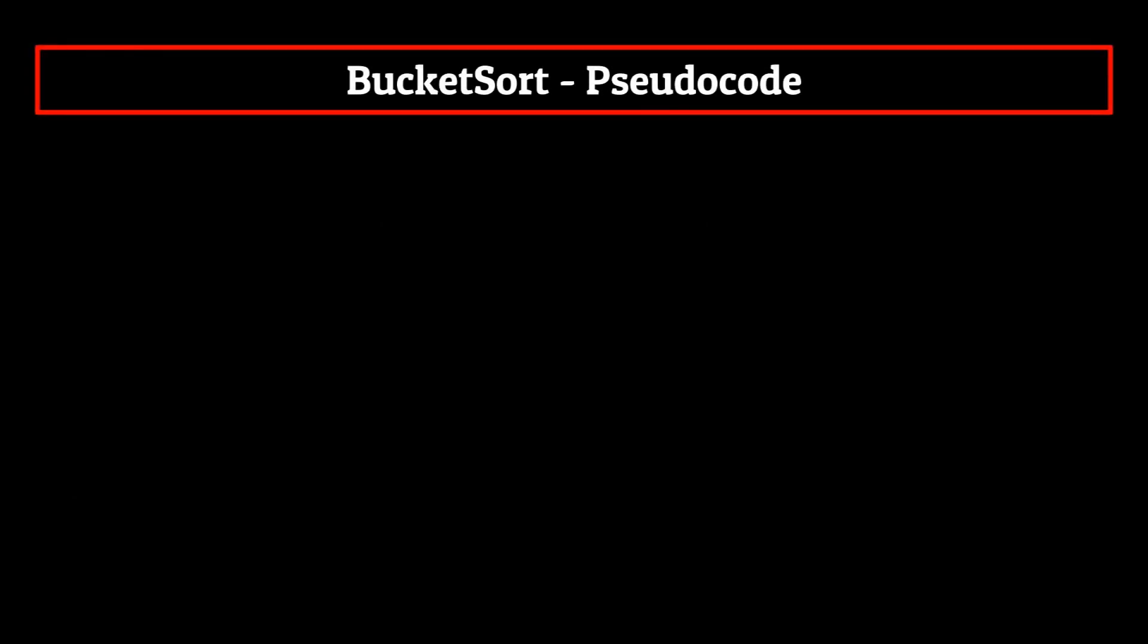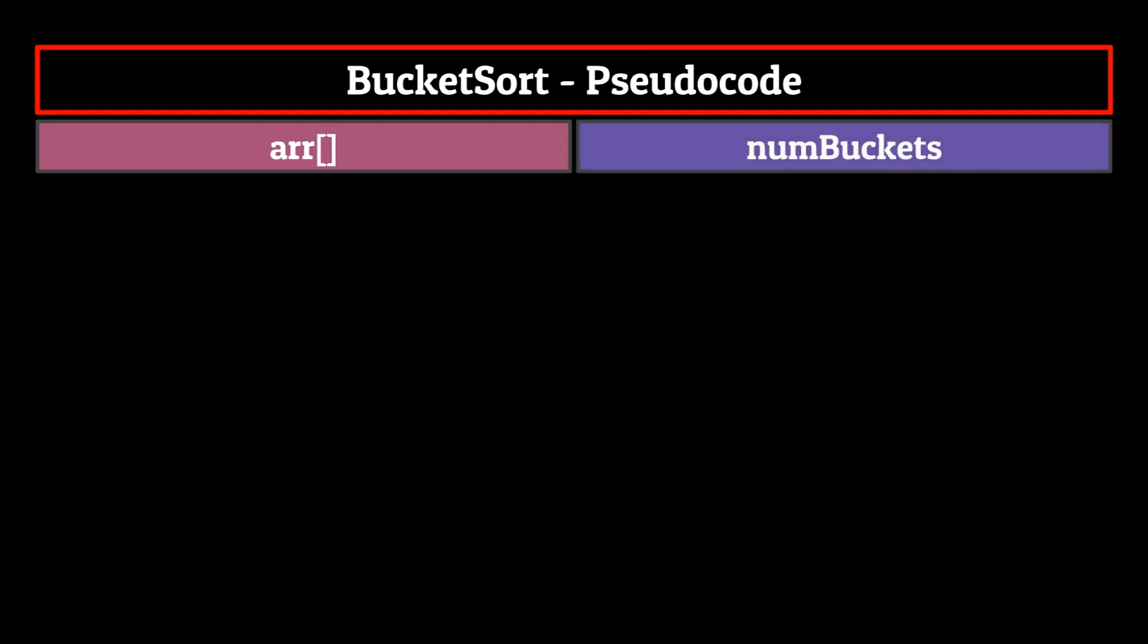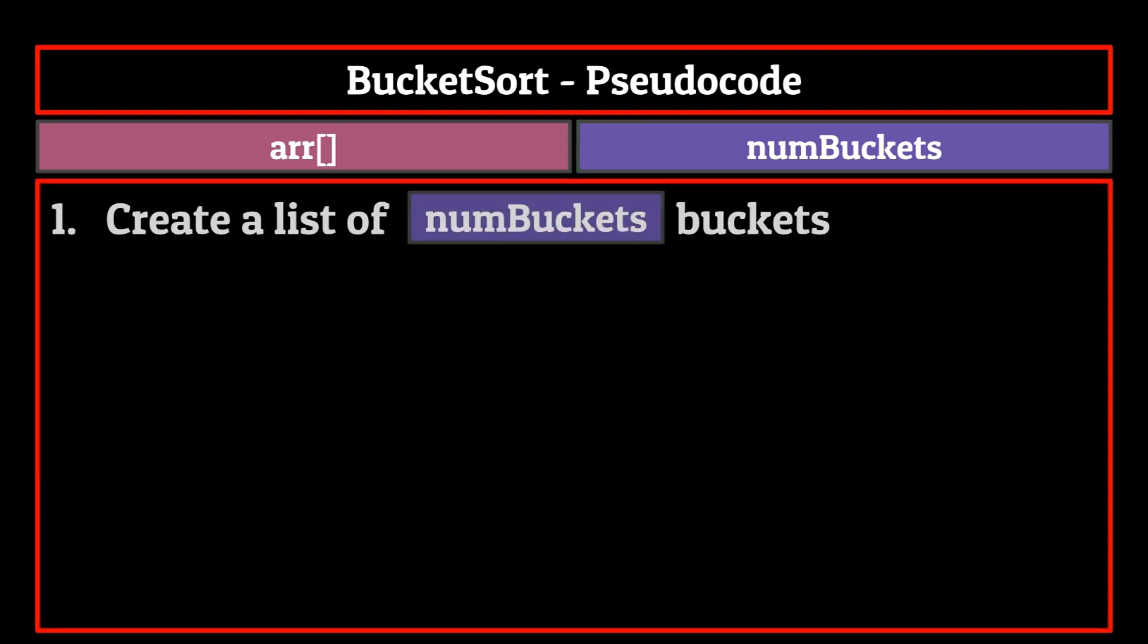Bucket sort is going to take in two arguments when called. These are going to be the array which we want to sort, which I'll call r, and an integer representing the number of buckets that we want, which I'll call num buckets. You should play around with the number of buckets until you find a number that fits your dataset.